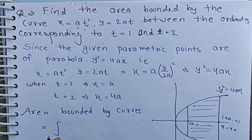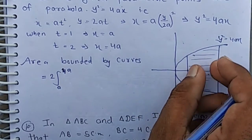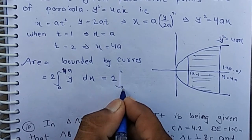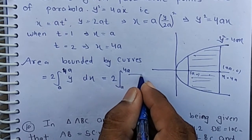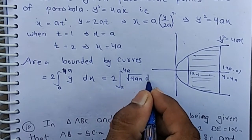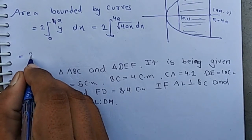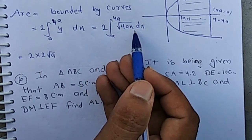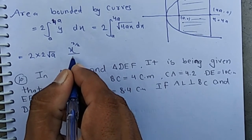The area equals 2 times the integral from a to 4a of y dx, since both parts are symmetrical. Substituting y equal square root of 4ax, we have 2 into root 4a times the integral of root x dx, which equals 2 root a times x to the power 3 by 2, divided by 3 by 2.